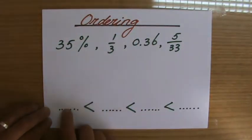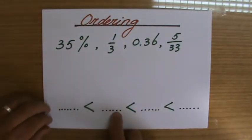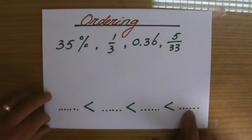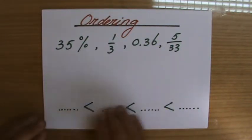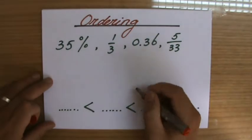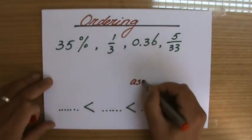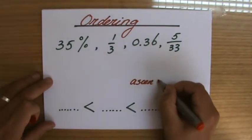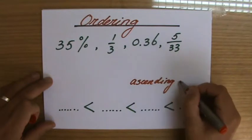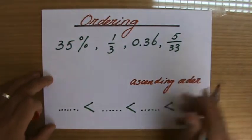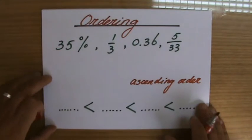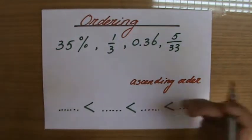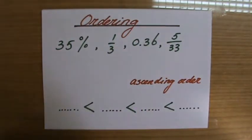This number is less than that number, which is less than that number, so the biggest number is at the end. This is in ascending order, which basically means from small to big — it's increasing. The opposite would be descending order.